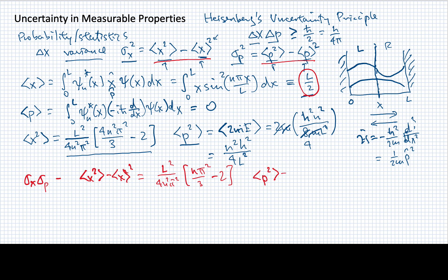Similarly, my variance for momentum, since the momentum expectation value is zero, it's just going to be the square root of this quantity here. So that's just going to be nh over 2L.